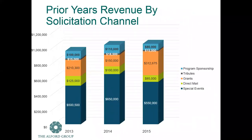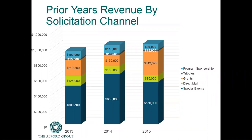When we build our goals by solicitation channel, we start from actual results. This Alford Analytics graphic for one of our clients shows how their sponsorship, tribute income, grants, direct mail, and special events contributed to their annual giving program. You can see right away where they have a huge dependence on special events, and when special events goes down by a hundred thousand, that's going to impact their results. So in planning a future annual giving program, take into account the need to diversify and the need to strengthen the special event and possibly put some effort into other channels.